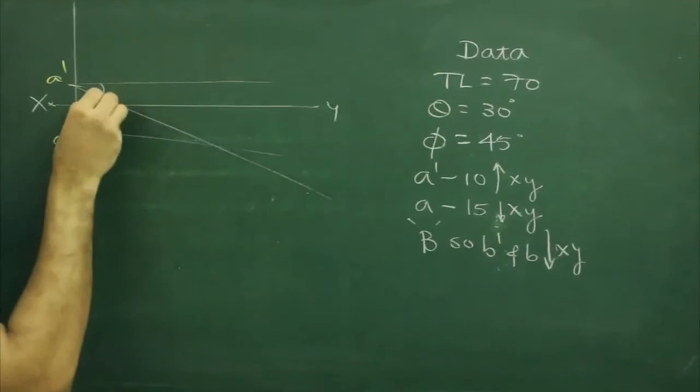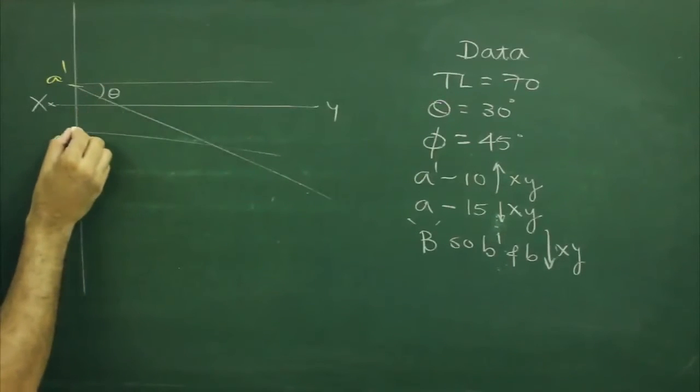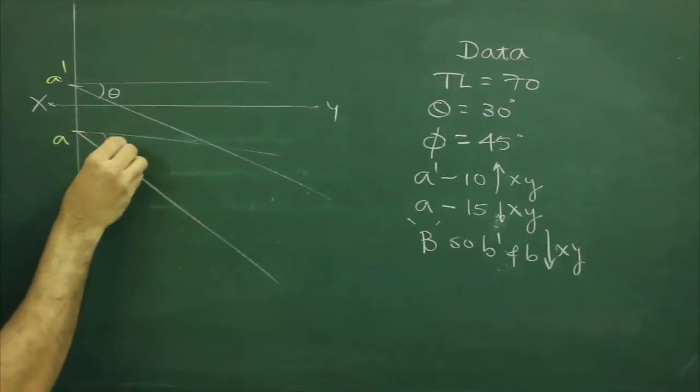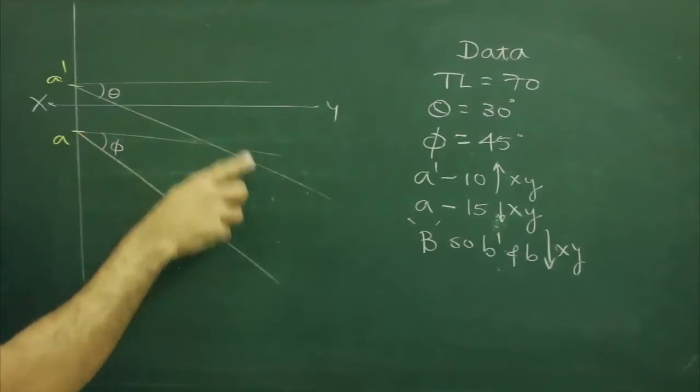First we will draw theta as well as phi. Now I am drawing down because b dash and b both are downwards.